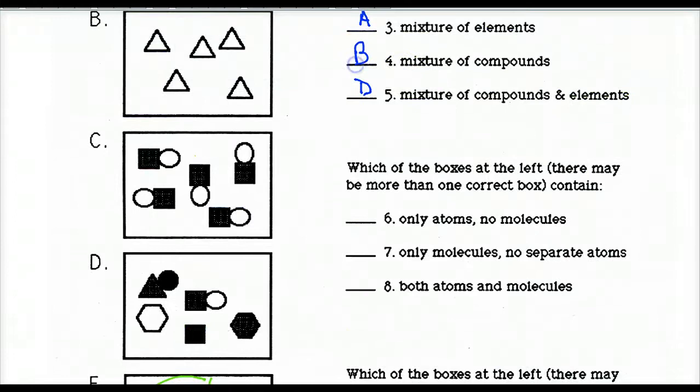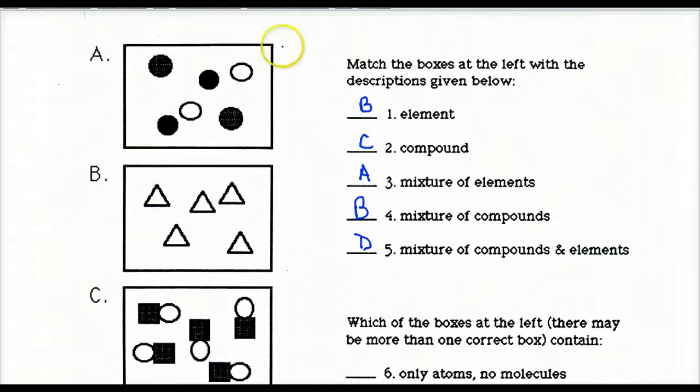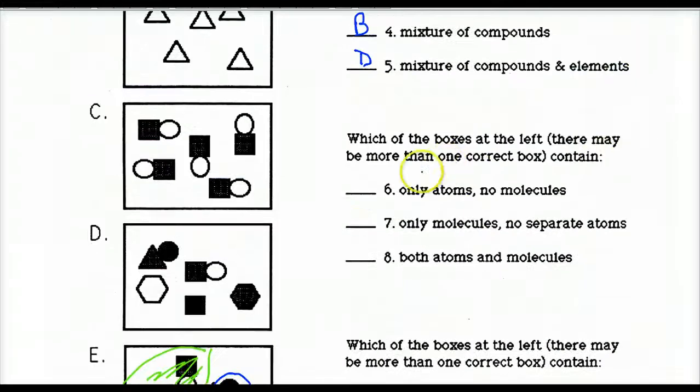Which of the boxes on the left contain only atoms, no molecules? That's free atoms, unbonded. So look at A. Those are atoms. B are atoms. They're free. They're not bonded. Not linked together. And so it looks like A and B.